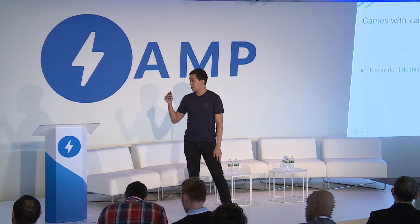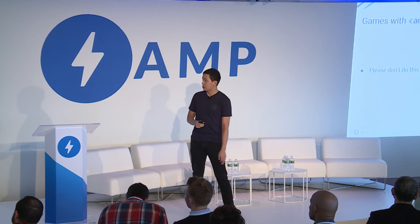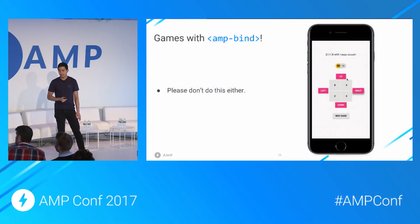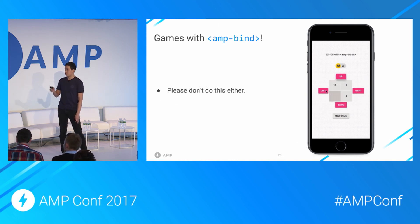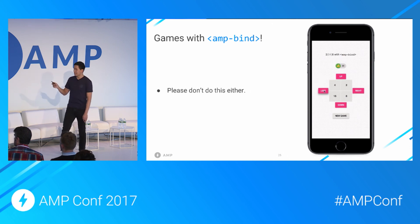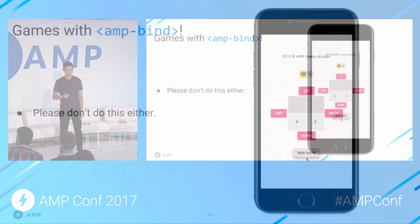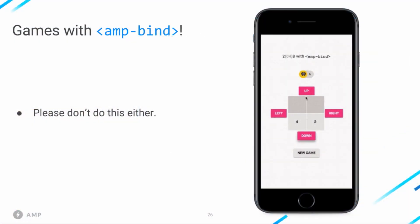For fun, I made a miniature clone of the popular game 2048 using AMP bind. This basically works by encoding the state of this 2x2 grid with a 2D array in the AMP state and really abusing the ternary operator — which is why I'm not showing any code on this slide. Look at it like the people who built a calculator in Minecraft — it shows some cool stuff you can do, but maybe not a real-world use case. That said, I think AMP bind is expanding the horizon of possibilities with AMP, so please check it out.